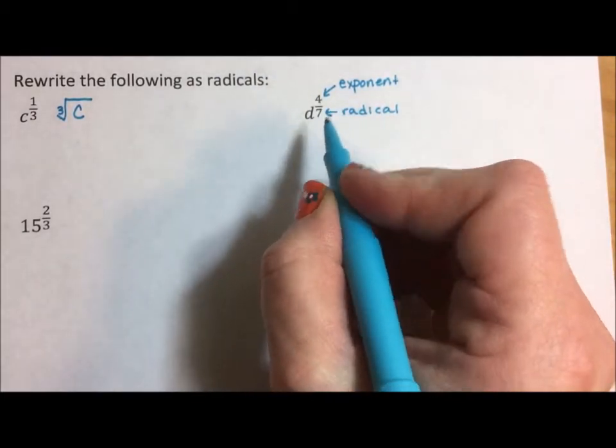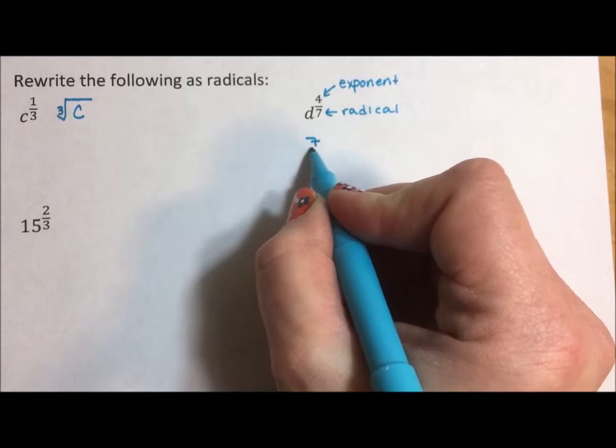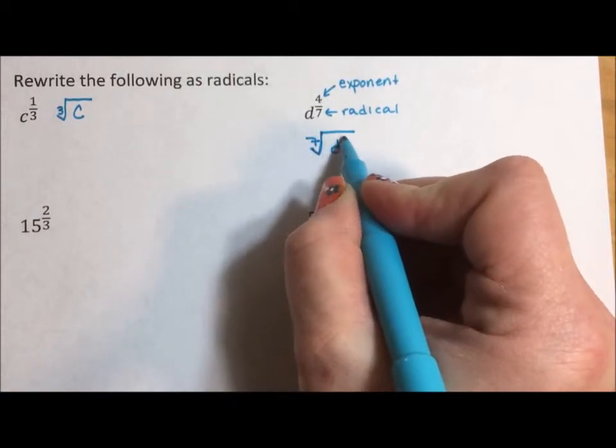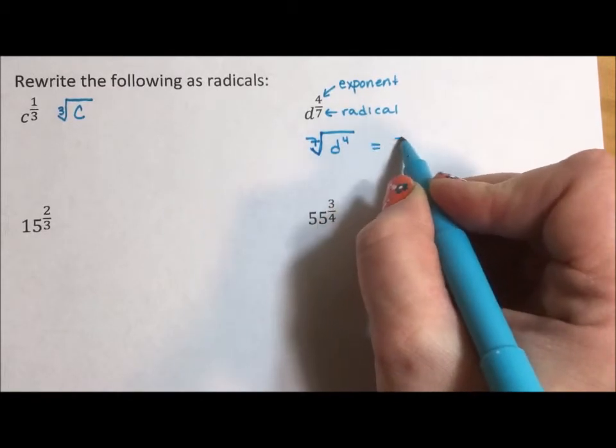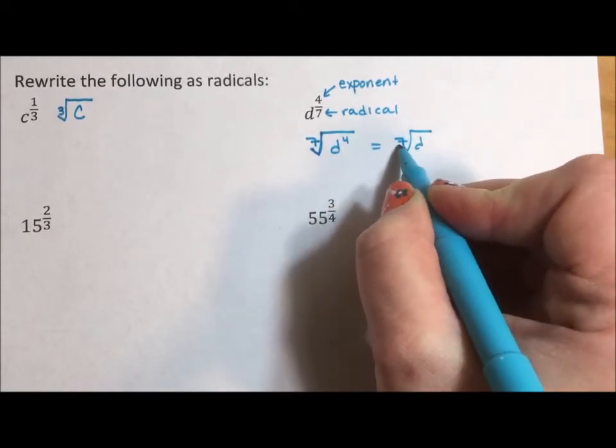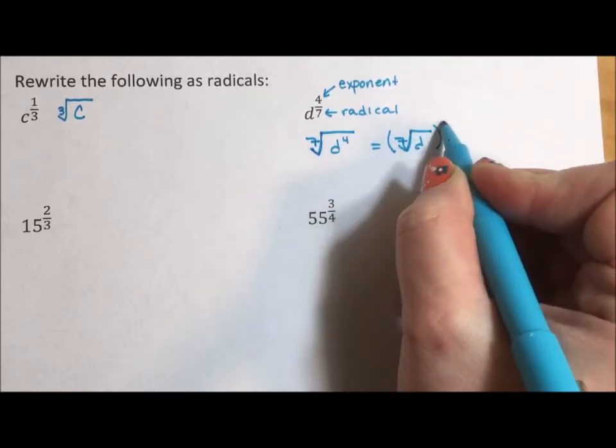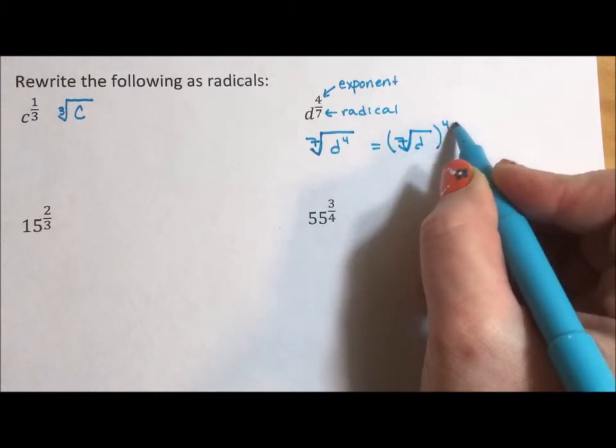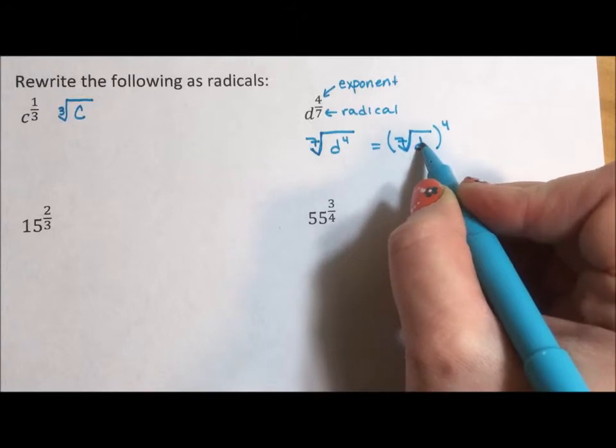So this becomes the seventh root. Again, the seven is in the v of d to the fourth. Now I can write it like that or I can say the seventh root of d to the fourth. The fourth can be outside of the radical or inside the radical.